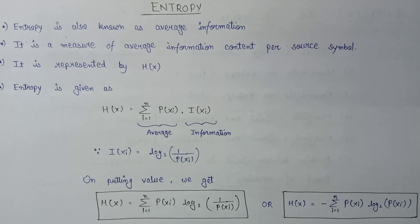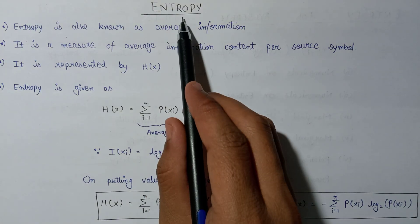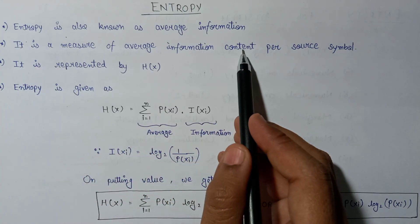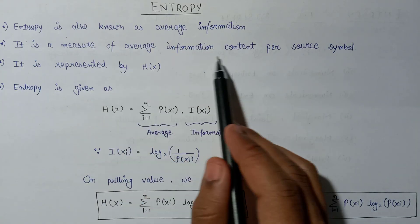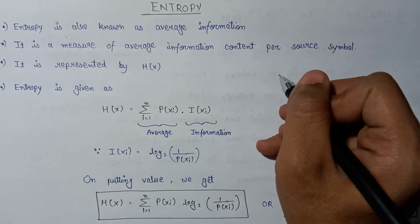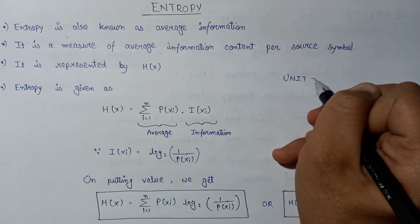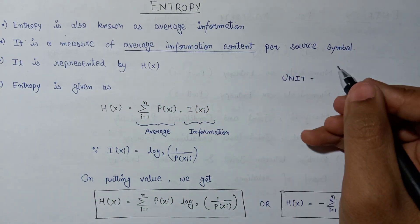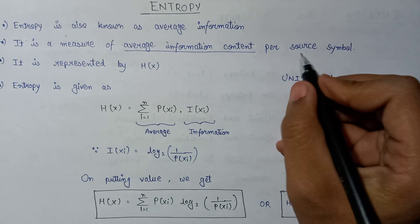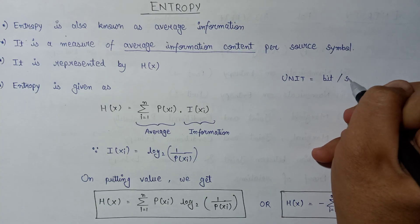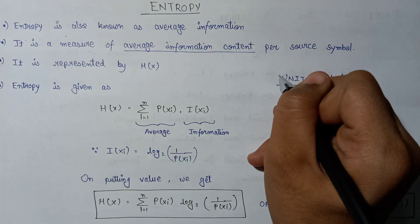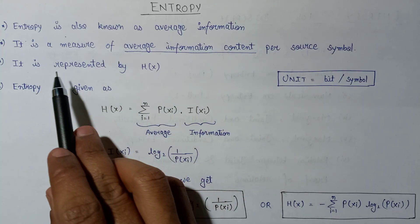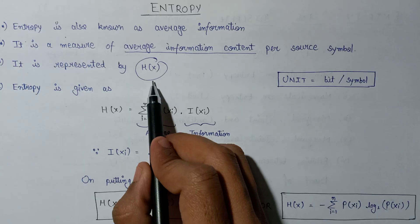Hi everyone, welcome back. In this lecture we are going to study about entropy. Entropy is defined as a measure of the average information content per source symbol. The unit of entropy is bit per symbol, since it measures average information content. Entropy is also known as average information and is represented by H(X).